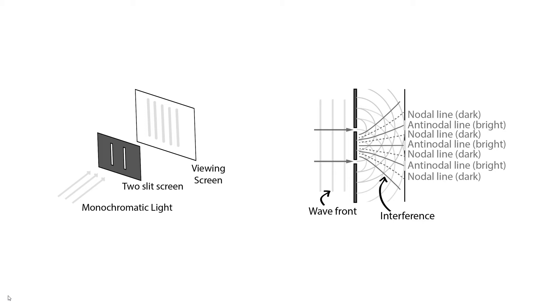At the places where the light underwent constructive interference, by the time that constructively interfering light reached the screen, it formed a bright band. Where the light underwent destructive interference, it formed a dark band on the screen.